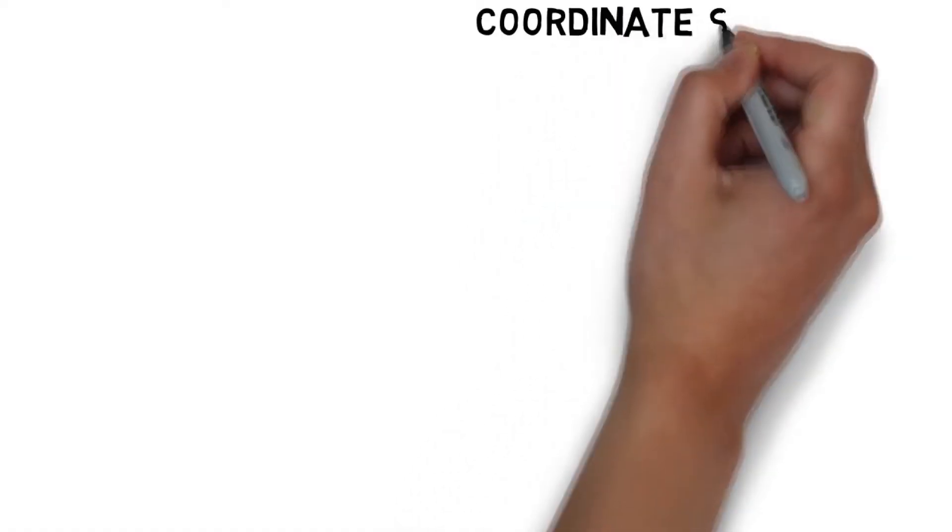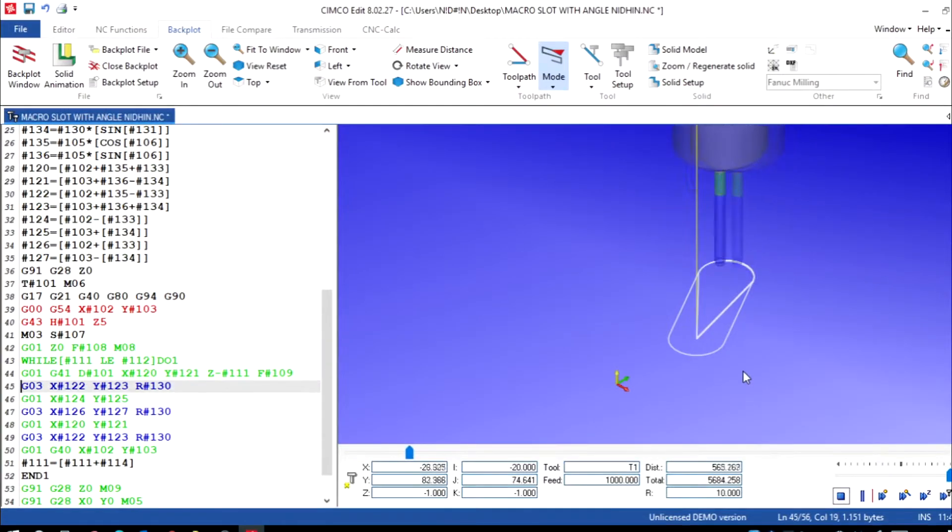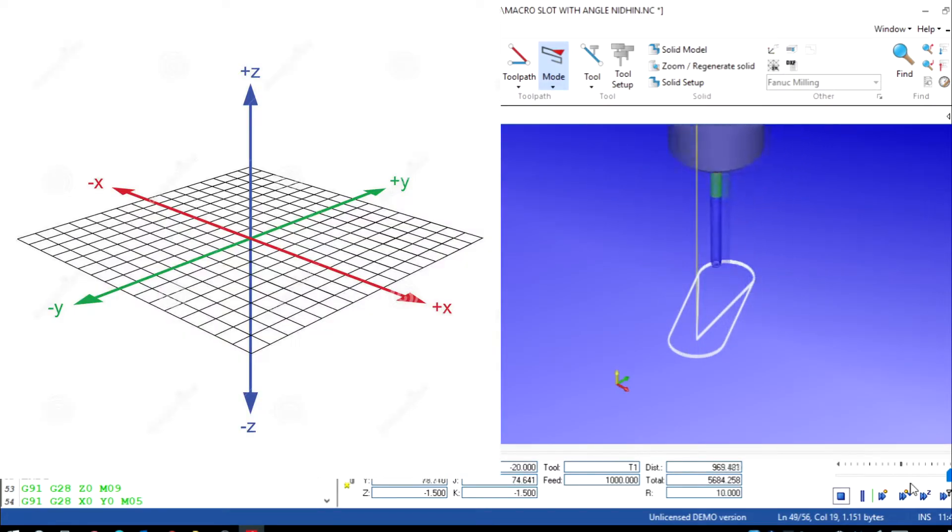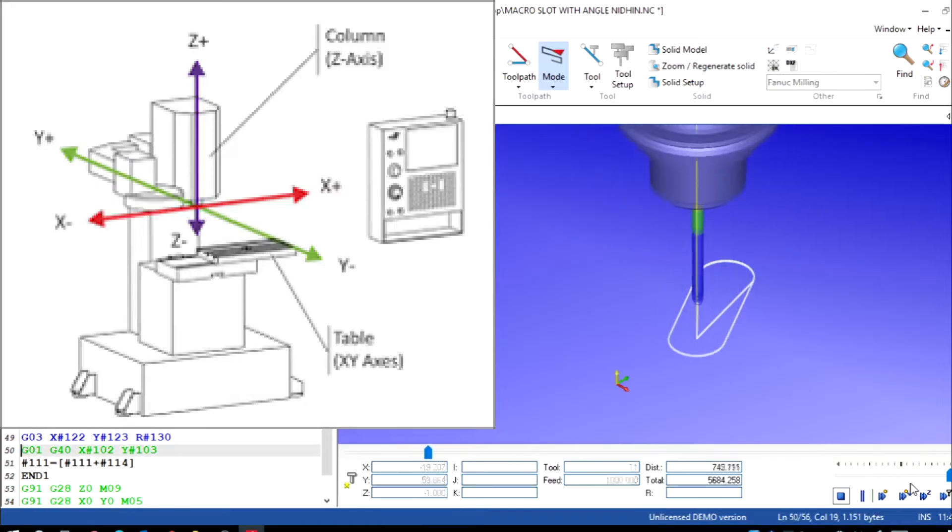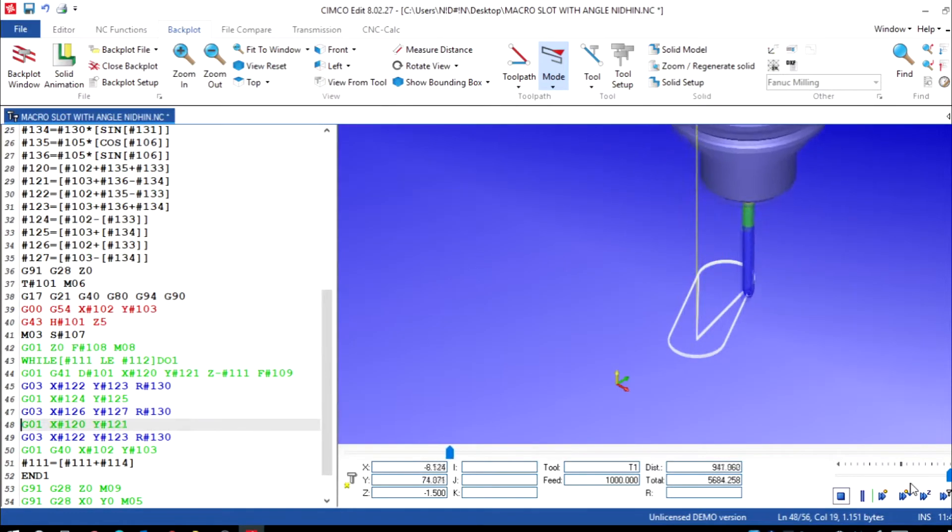Now we will explain detail about coordinate system. In CNC programming, coordinate calculations are required for specifying the cutter locations according to the toolpath required. When we look from the top view,